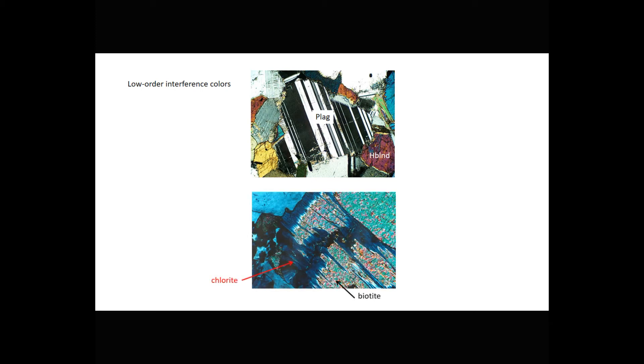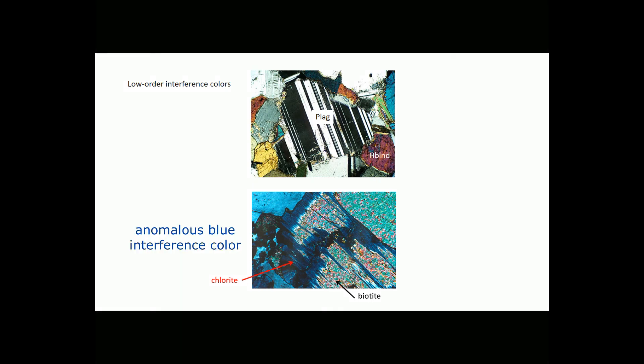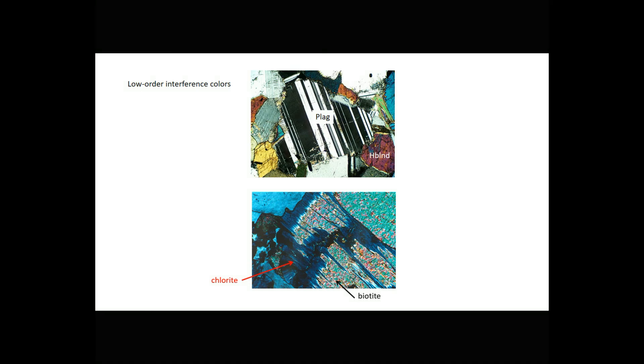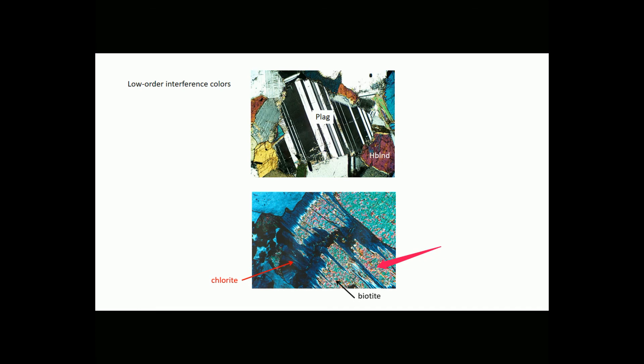Some minerals, and chlorite is a great example, display what we call anomalous interference colors. And we call them anomalous because they don't show up on the normal interference color chart. Anomalous interference colors are caused by two things most of the time. Either the mineral has very low birefringence. This can give very strange interference colors. Or the mineral is naturally colored, and the strong natural color of the mineral masks the interference colors. You can see an interesting texture in this bottom view. There is biotite, which sort of has a pebbly, a middle- to upper-order interference color pattern, which is altering to an inky blue chlorite. So the biotite was turning into a low-temperature mineral, but the reaction never went to completion before the rock was done reacting.